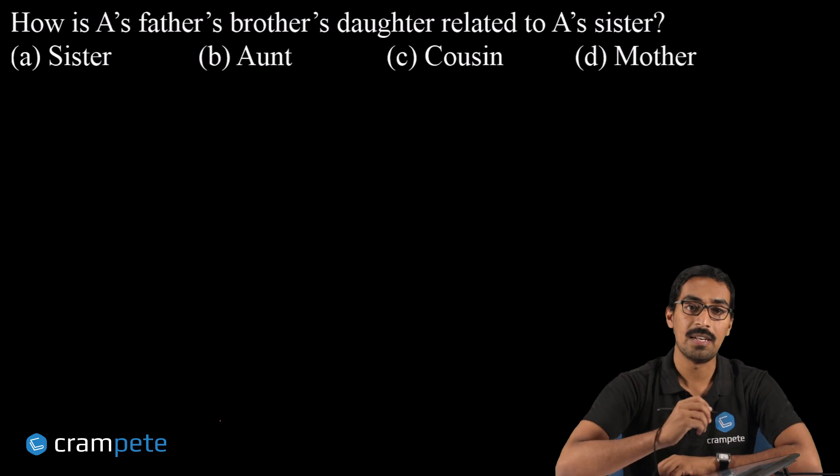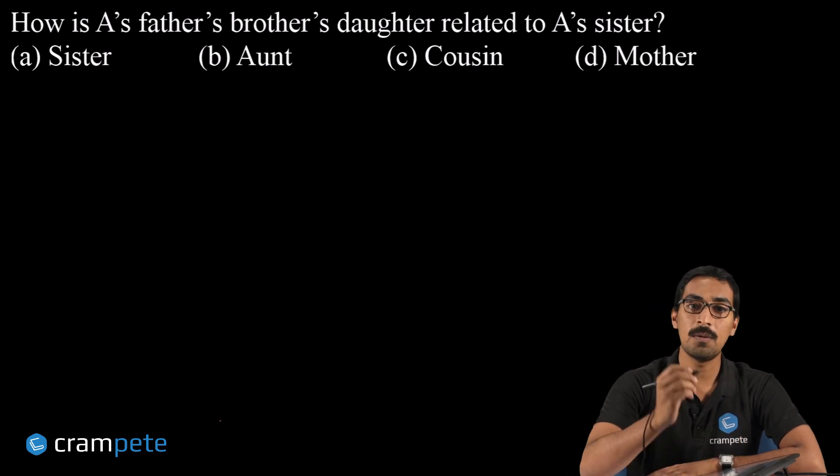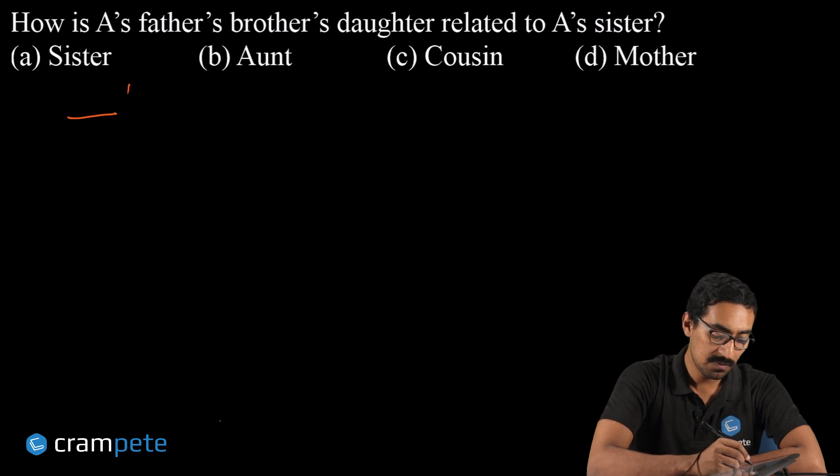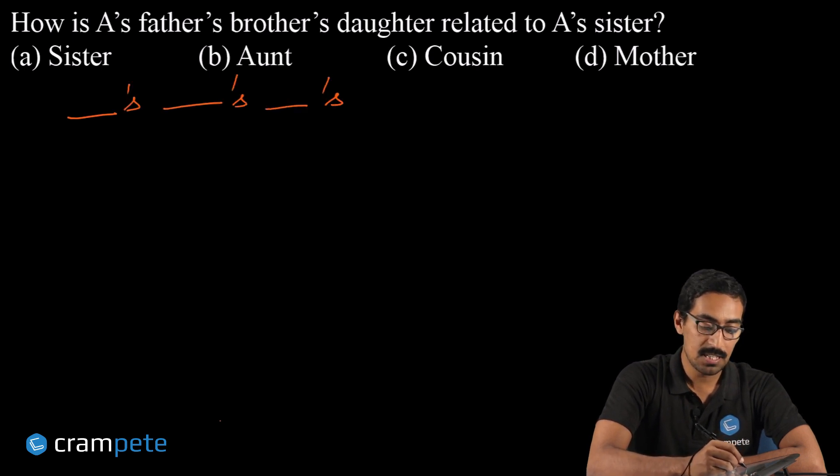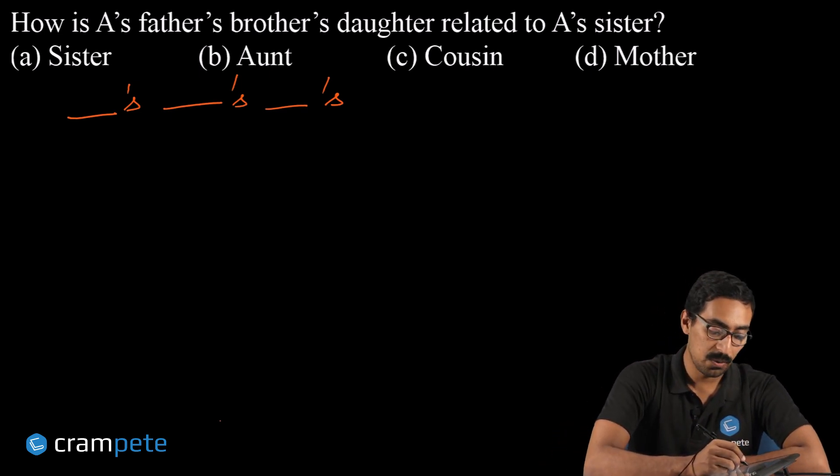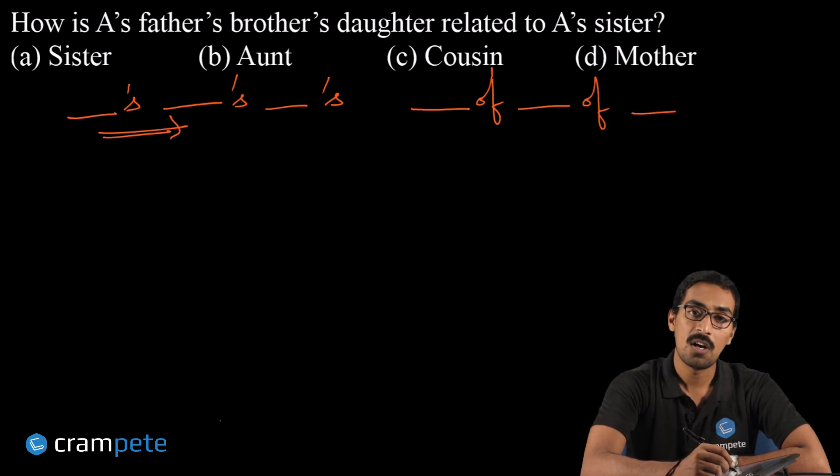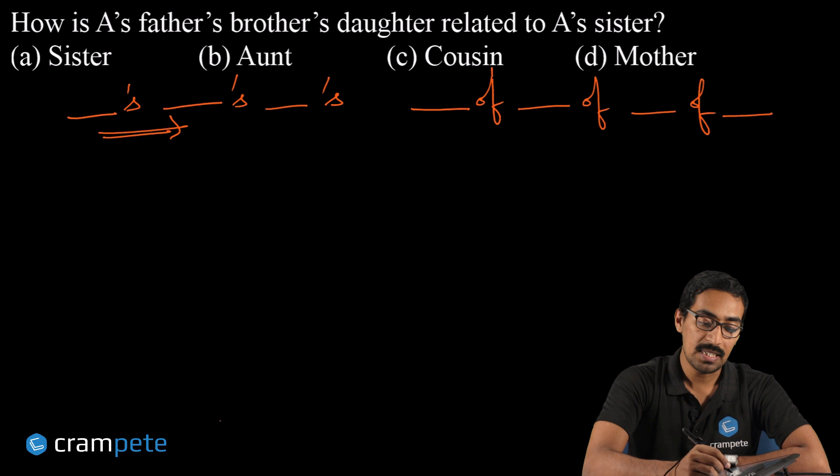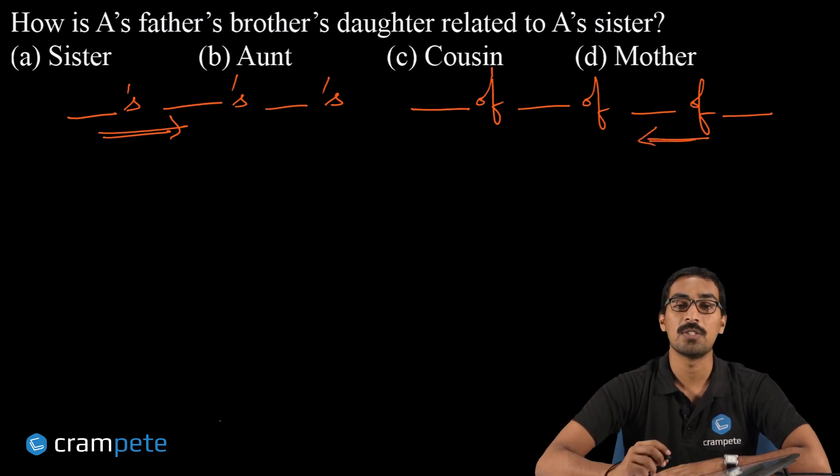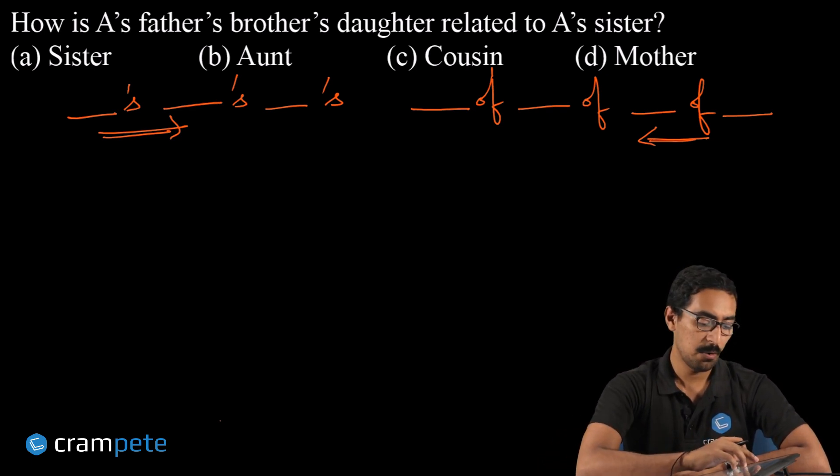So how do we do this problem? Yes, definitely by drawing the family tree. Now, who do we start with? Always remember one thing important in family trees: whenever you get someone's someone else's someone else when you keep having apostrophe s, please go from left to right. And when you have something of something else of something else and so on, please come from right to left.